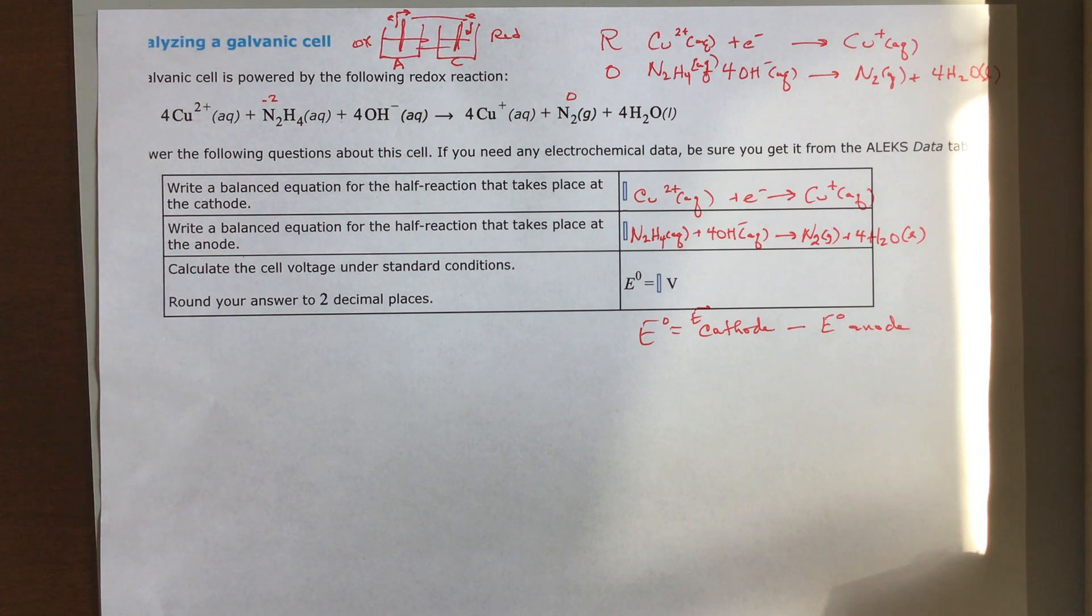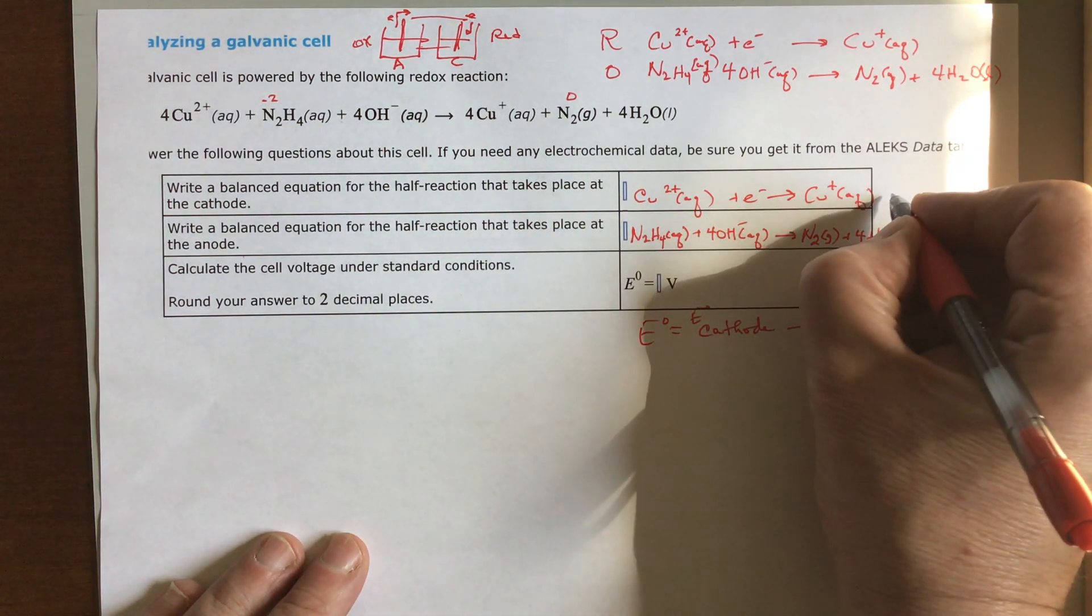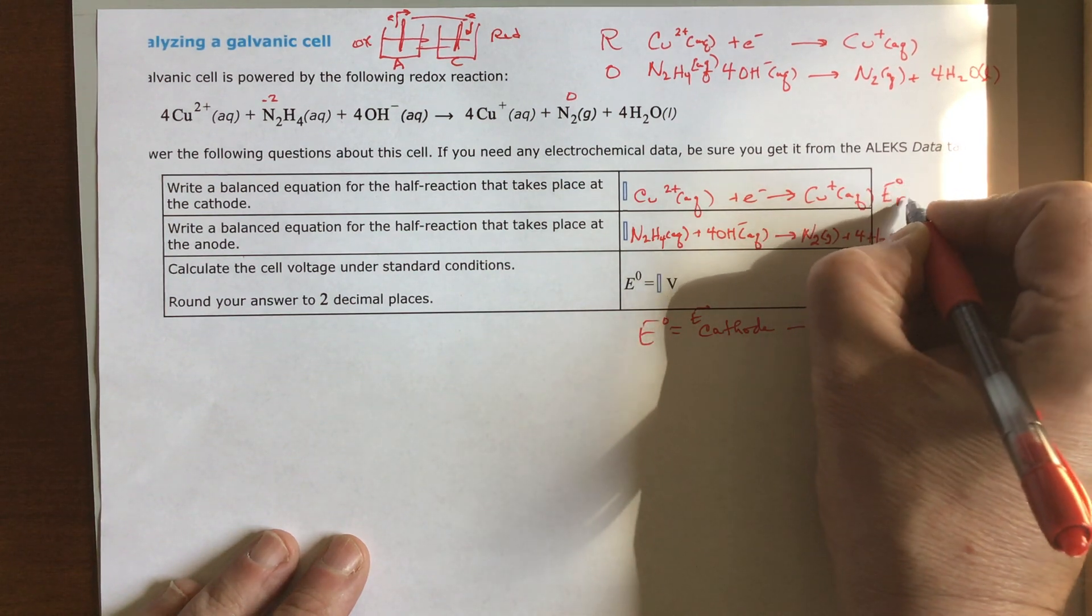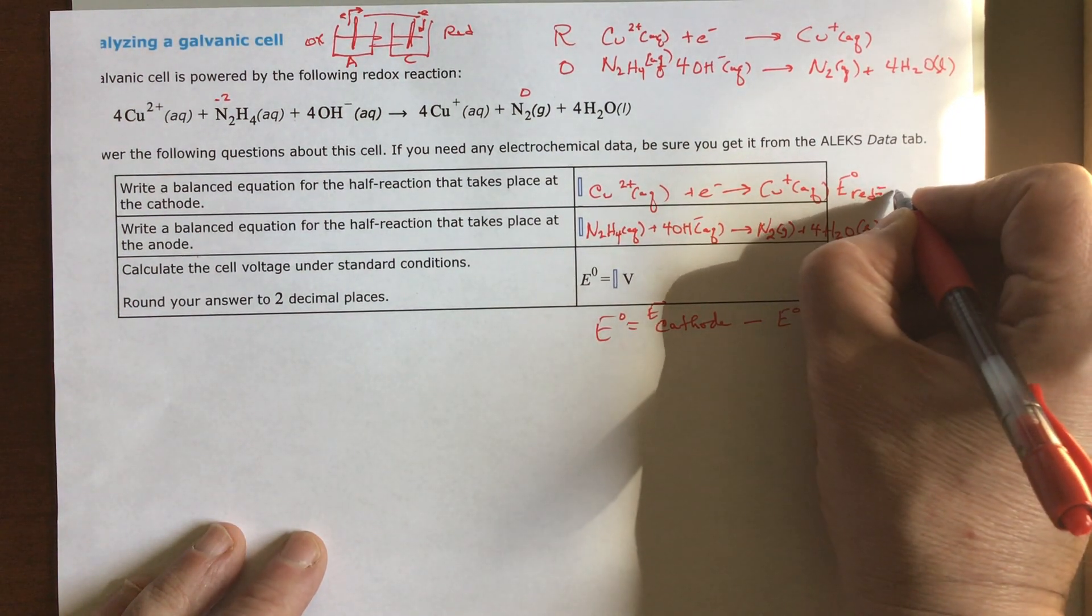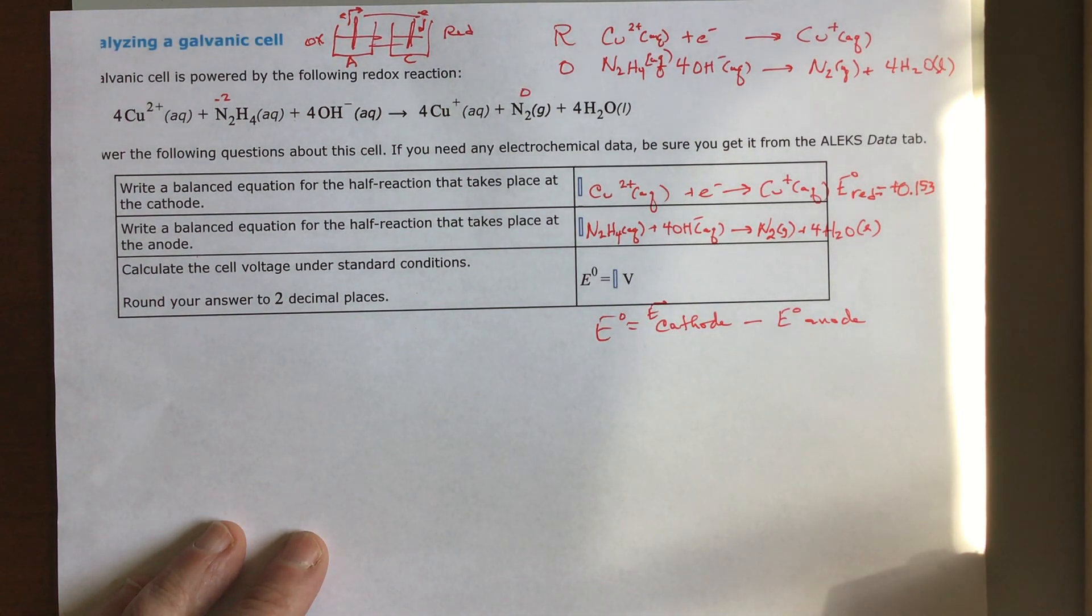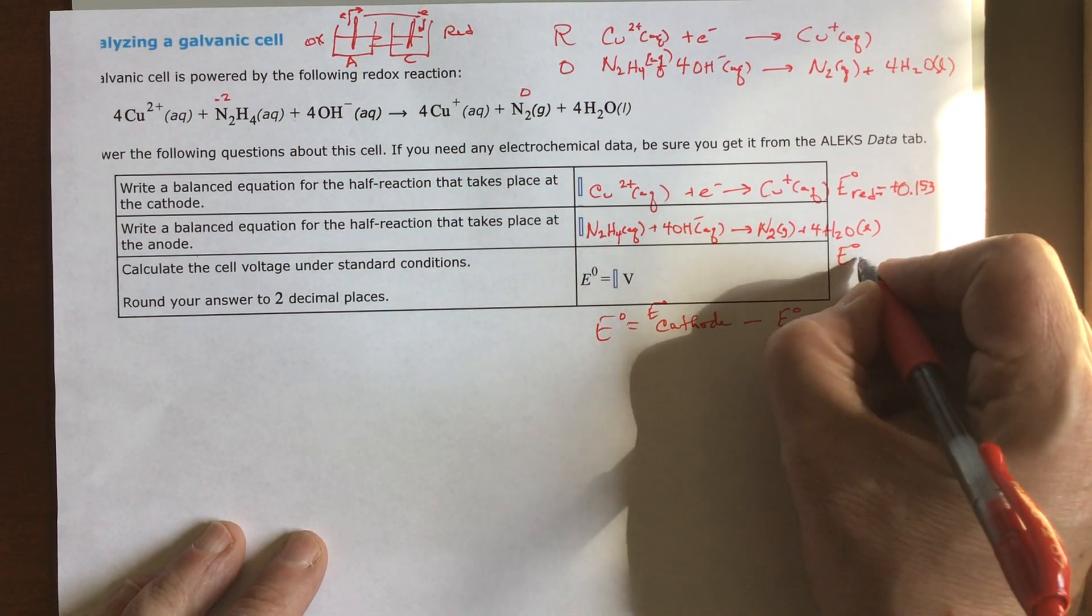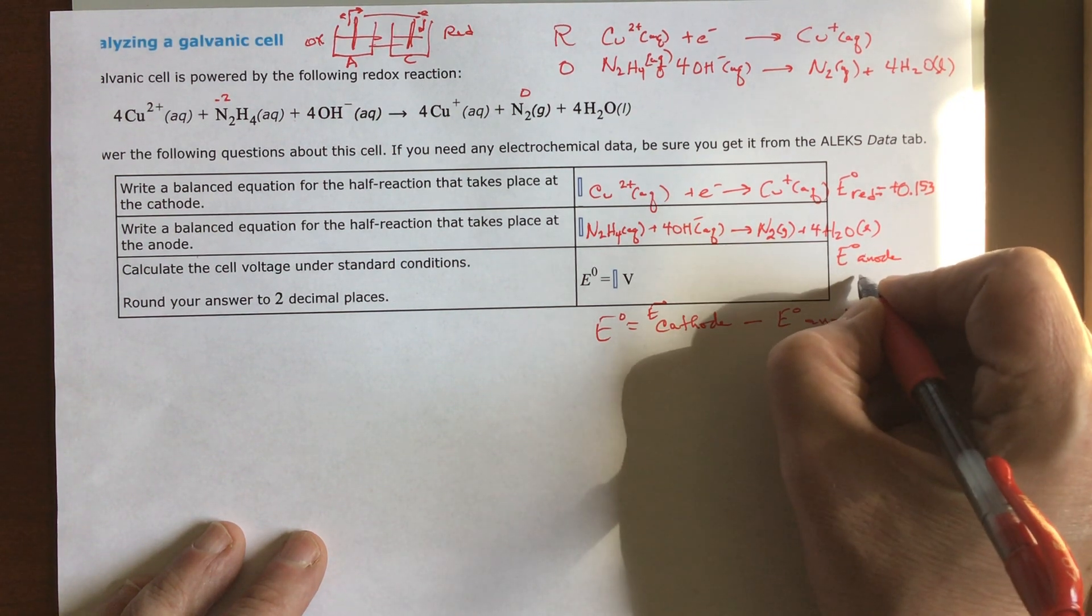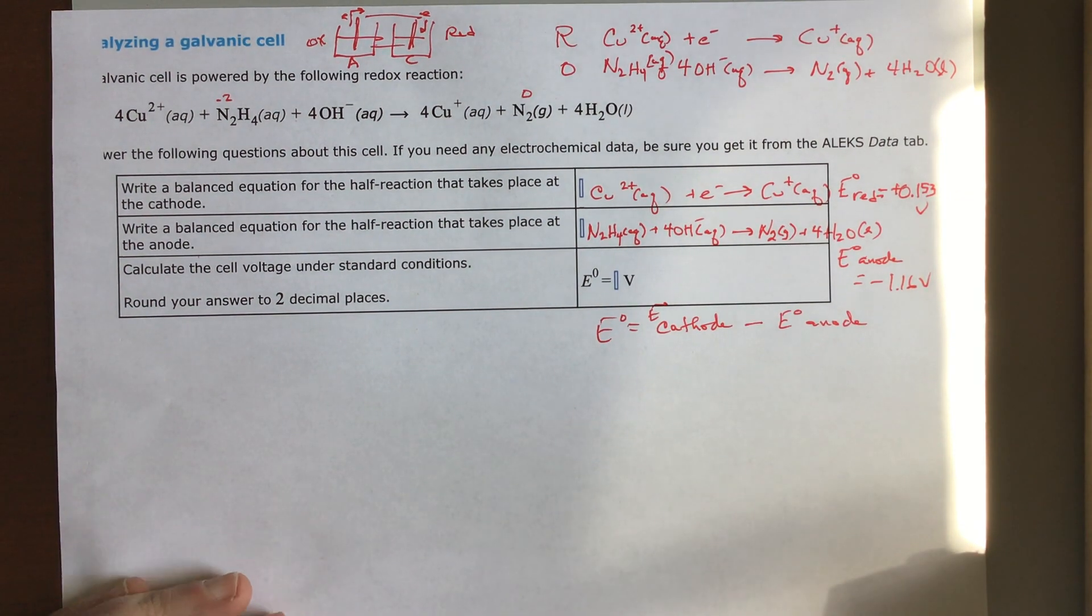So I looked them up and the first one I found was this one exactly like it is. The voltage, the E of the reduction, equals positive 0.153 volts. And this one was there as well. This is your potential at the anode, which equals negative 1.16 volts.